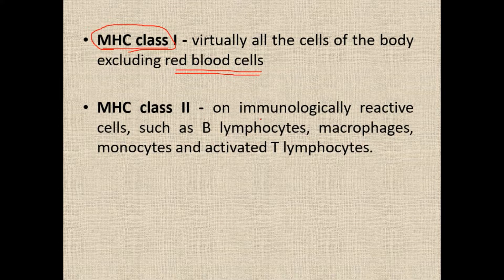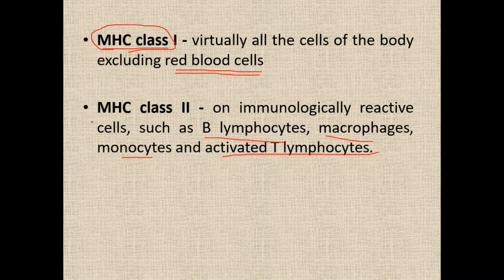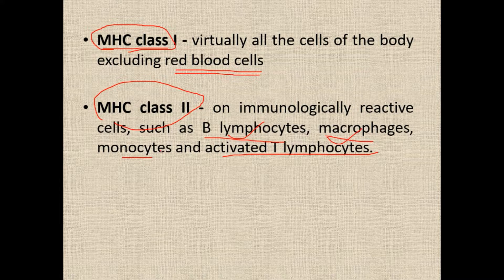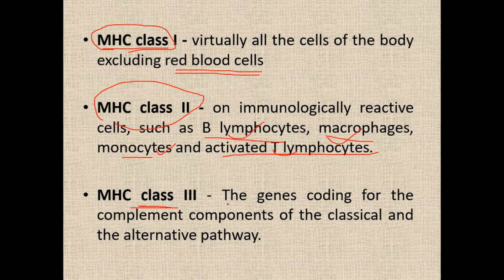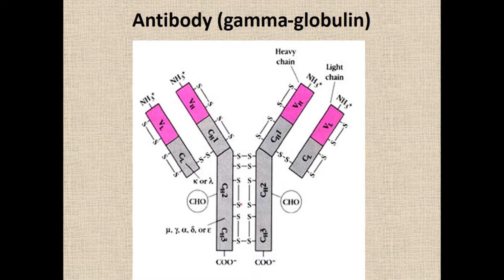MHC class 2 antigens are present on immunologically reactive cells such as B lymphocytes, macrophages, monocytes, and activated T lymphocytes. MHC class 3: the genes coding for the complement components of the classical and the alternative pathway. So MHC class 3 genes code for the complement components of the classical and alternative pathway.